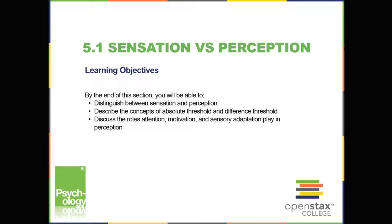One way to think of this is that sensation is a physical process, whereas perception is psychological. For example, upon walking into a kitchen and smelling baking cinnamon rolls, the sensation is the scent receptors detecting the odor of cinnamon, but the perception may be, "this smells like the bread grandma used to bake when the family gathered for holidays." Not all sensations result in perception — we often don't perceive stimuli that remain relatively constant over prolonged periods. This is known as sensory adaptation.